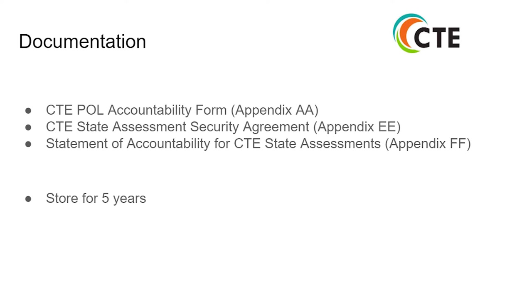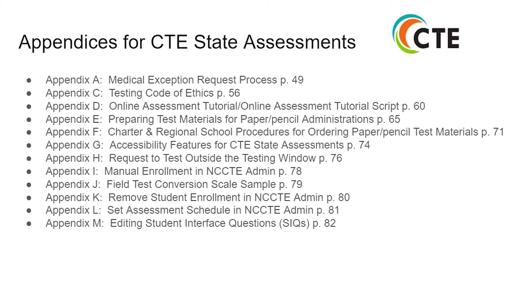Located in the appendices is also important documentation. In Appendix AA you will find the CTE POL accountability form. In Appendix EE will be the CTE state assessment security agreement. In Appendix FF is the statement of accountability for CTE state assessment. Documentation should be stored for five years. The next two slides contain all appendices relevant to CTE state assessment, and Appendix A covers the medical exemption request process.